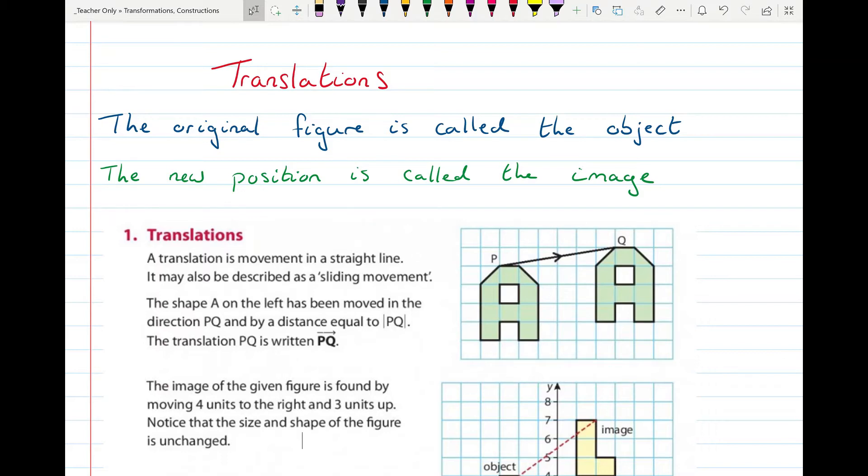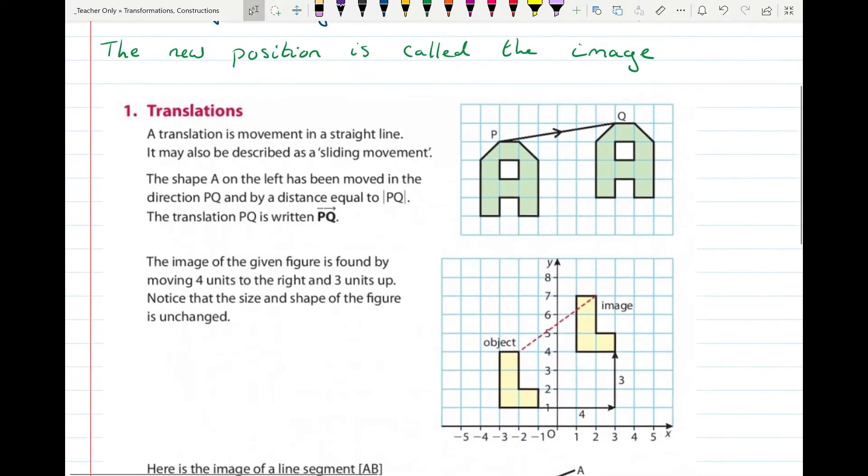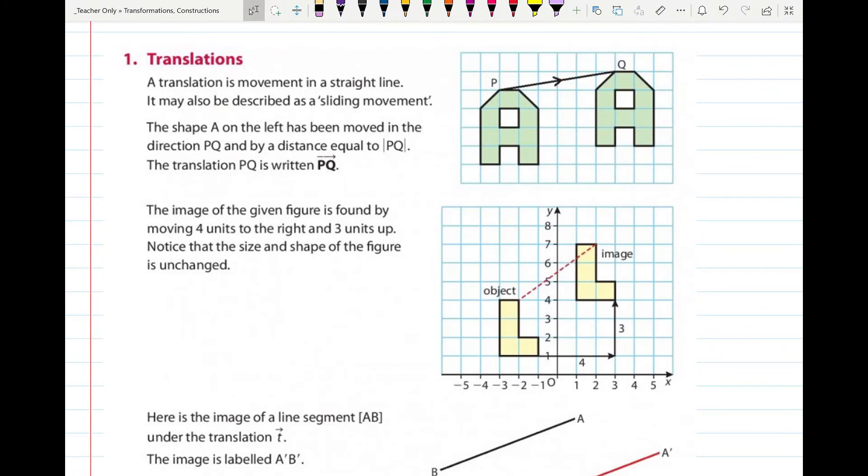I've just taken this page straight out of your book because I think they explain it quite well. So the first thing we're going to look at in Transformations is called Translations. So Translations are a type of Transformations. A translation is a movement in a straight line. It may also be described as a sliding movement. The shape A on the left has been moved in the direction PQ and by a distance equal to the distance PQ.